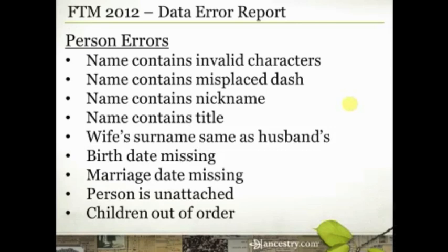The last person error is children out of order. This drives me crazy when I find a family — especially large ones — where six or seven children are out of birth order. There is a simple button to put them in order, but if I don't know which children are out of order, this gives me a list of those families that need to be put in the proper birth order. This happens mostly because we enter children from an obituary and only later find their birth dates, then forget to reorder them.